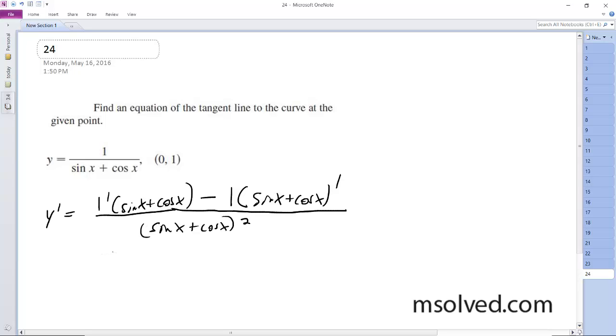All right, so this becomes... the first part's 0 and then minus, so this becomes negative cosine x and then... actually, this becomes cosine x minus sine x all over sine x plus cosine x squared.